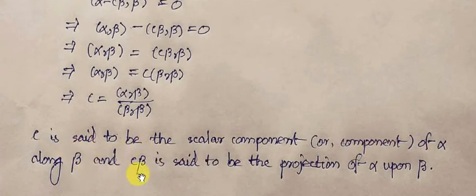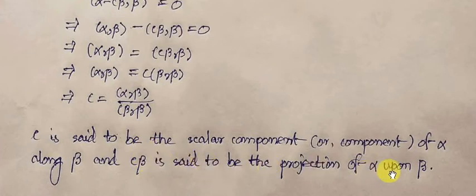And C*beta is called the projection of alpha upon beta.